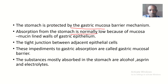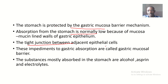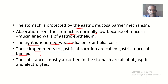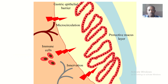Absorption from the stomach is normally low because of the mucosa — that's why food is digested in the stomach but absorption takes place mainly in the small intestine. The tight junctions between adjacent epithelial cells form the barrier, not allowing substances through the mucosal layer. The substances mostly absorbed in the stomach are just alcohol, aspirin, and electrolytes.